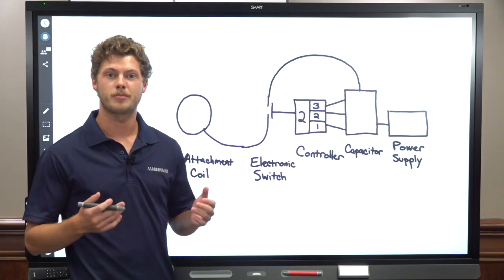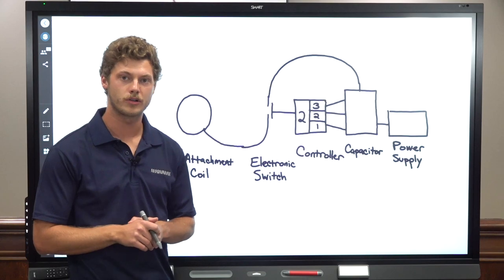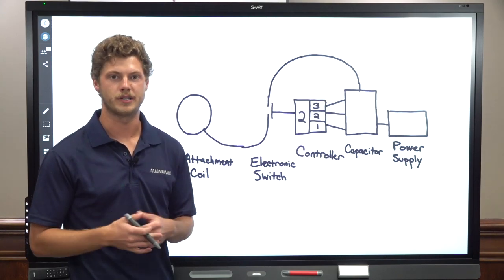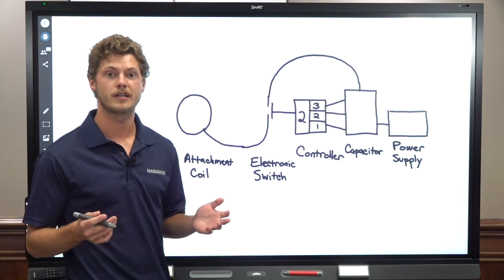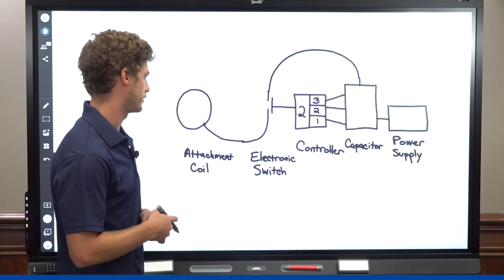As you can see, for a higher power setting, the capacitor will take longer to charge up and there will be more time in between each pulse. A lower setting would pulse more frequently and take less time to charge the capacitor.